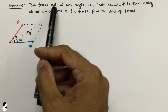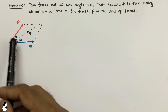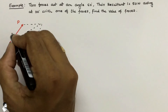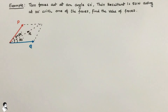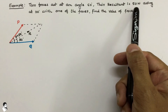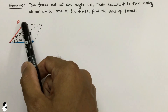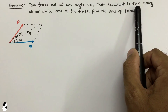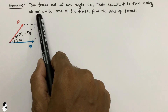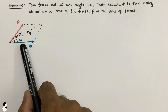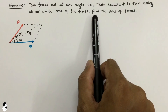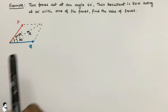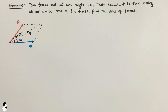In this next example, two forces act at an angle of 60 degrees, so theta is 60 degrees. The resultant is given as 50 Newton and it is acting at 30 degrees with one of the forces — let us take 30 degrees with force Q. In previous examples forces were given and we found the resultant, but here the resultant is given and we are required to find the value of the two forces P and Q.